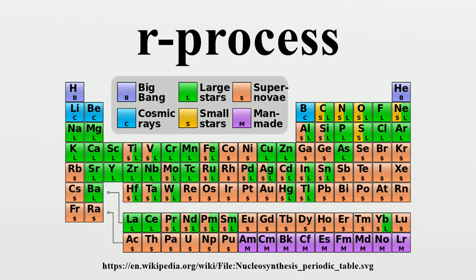Today, the R process abundances are determined using their technique of subtracting the more reliable S process isotopic abundances from the total isotopic abundances and attributing the remainder to R process nucleosynthesis. That R process abundance curve gratifyingly resembles computations of abundances synthesized by the physical process. Most neutron-rich isotopes of elements heavier than nickel are produced, either exclusively or in part, by the beta decay of very radioactive matter synthesized during the R process by rapid absorption, one after another, of free neutrons created during the explosions.